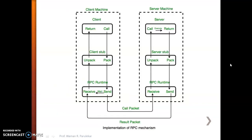Looking at the diagram, there is a client machine and a server machine, with a client process, server process, client stub, server stub, and RPC runtime on each side. The client generates a request as a normal function call, which is sent to the client stub. The client stub packs the specifications of the target procedure and arguments into a message, and asks the local RPC runtime to send it to the server.